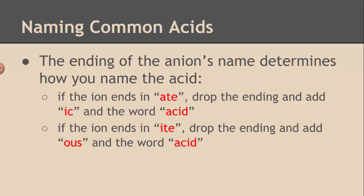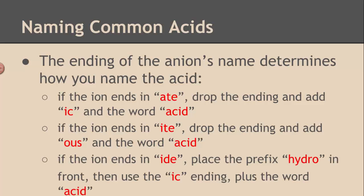Those two should be familiar because we've used those endings before in old names. Finally, if the ion ends in -ide, you drop that -ide, you put a prefix, hydro, and then you put the -ic ending, and then put the word acid. So it's very simple. Just look at the ending of the anion's name, change it as necessary, and put the word acid at the end.